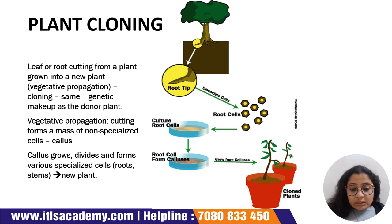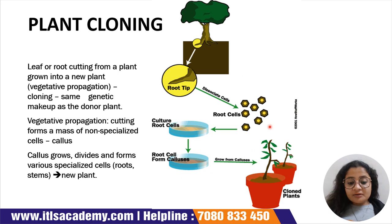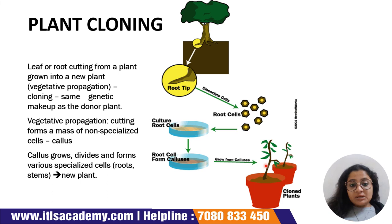Now coming to the main body of today's topic — Genetic Engineering of Plants — I would like to start with plant cloning. Cloning comes from the word clone. What are clones? Exact replicas. Since we are talking about a living organism, we need to say exact genetical replica, meaning the genetic makeup and genetic constitution of the plant will be exactly the same as the previous plant. This is the parent plant from which we are going to clone another plant.